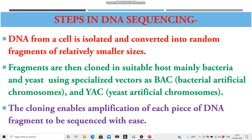The steps in DNA sequencing: The DNA is isolated from a cell and converted into random fragments of relatively smaller sizes. These fragments are then inserted into a host organism, mainly bacteria and yeast, using specialized vectors such as bacterial artificial chromosomes and yeast artificial chromosomes. The purpose of cloning is that it enables amplification of each piece of DNA fragment to be sequenced with ease.